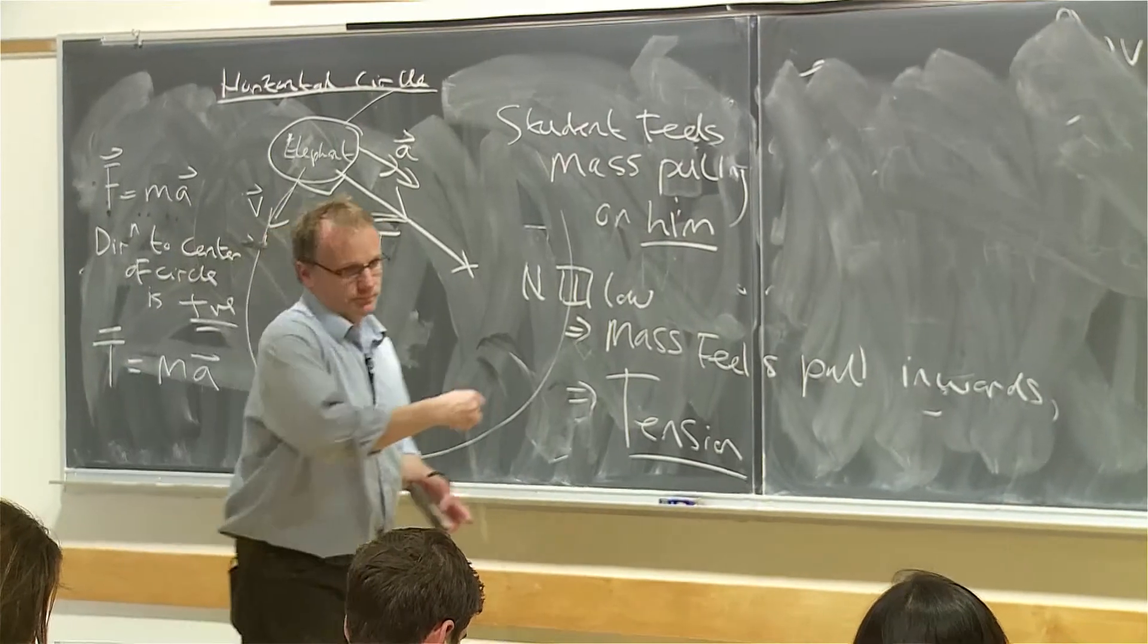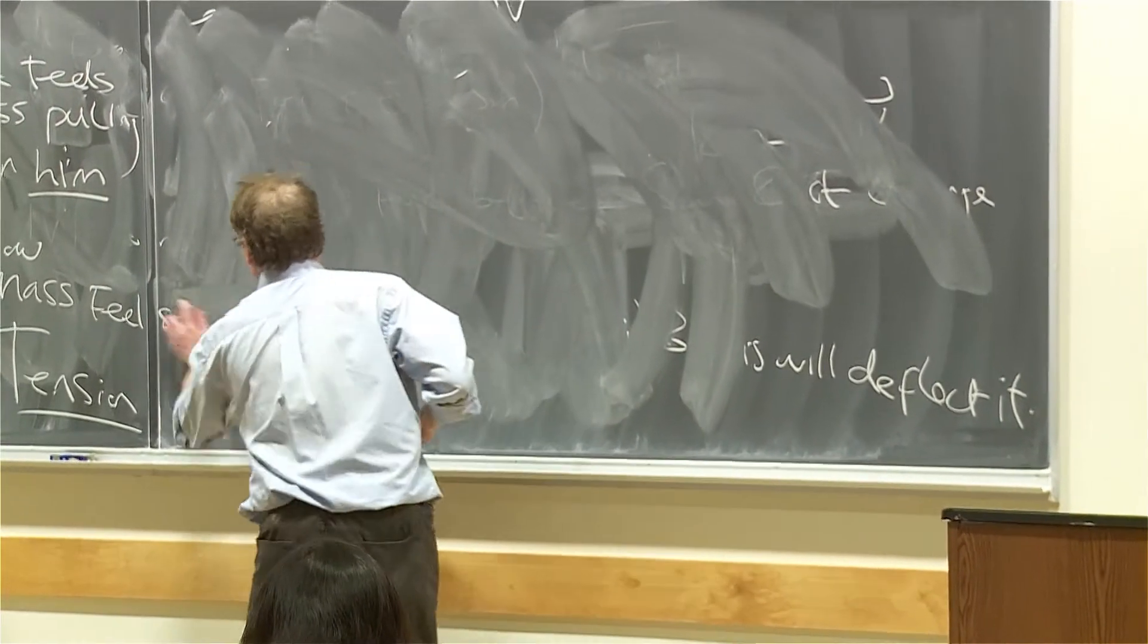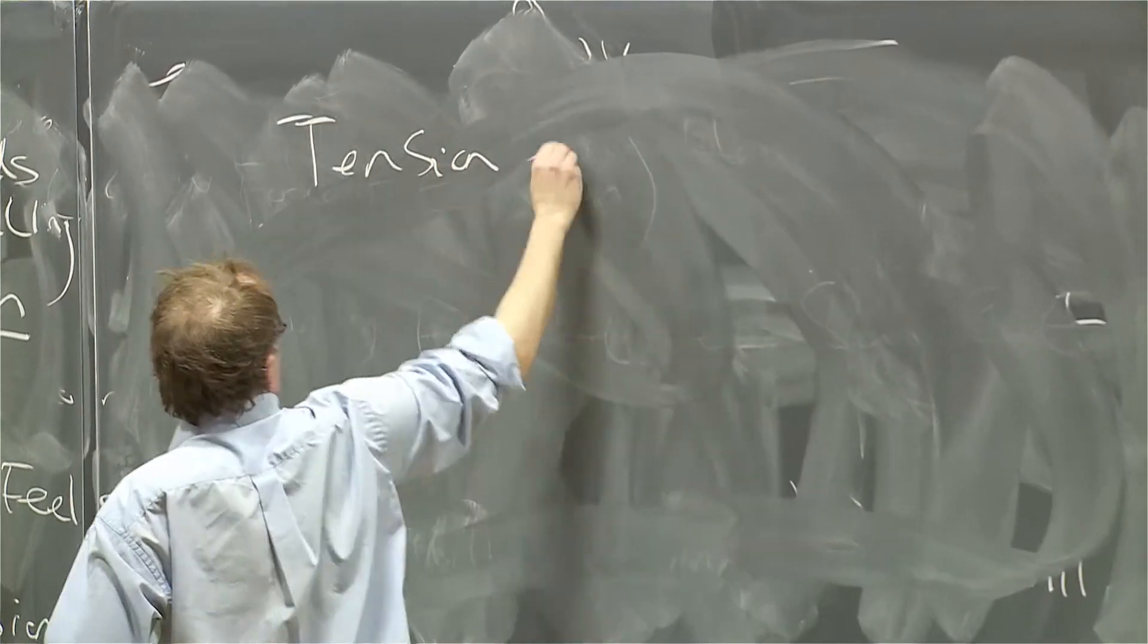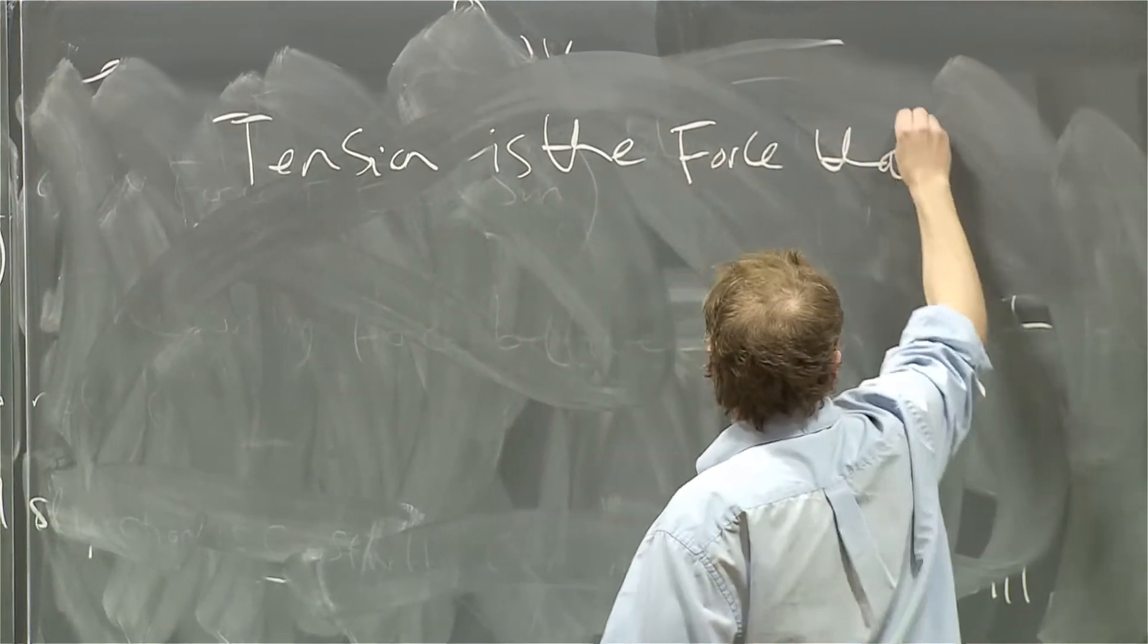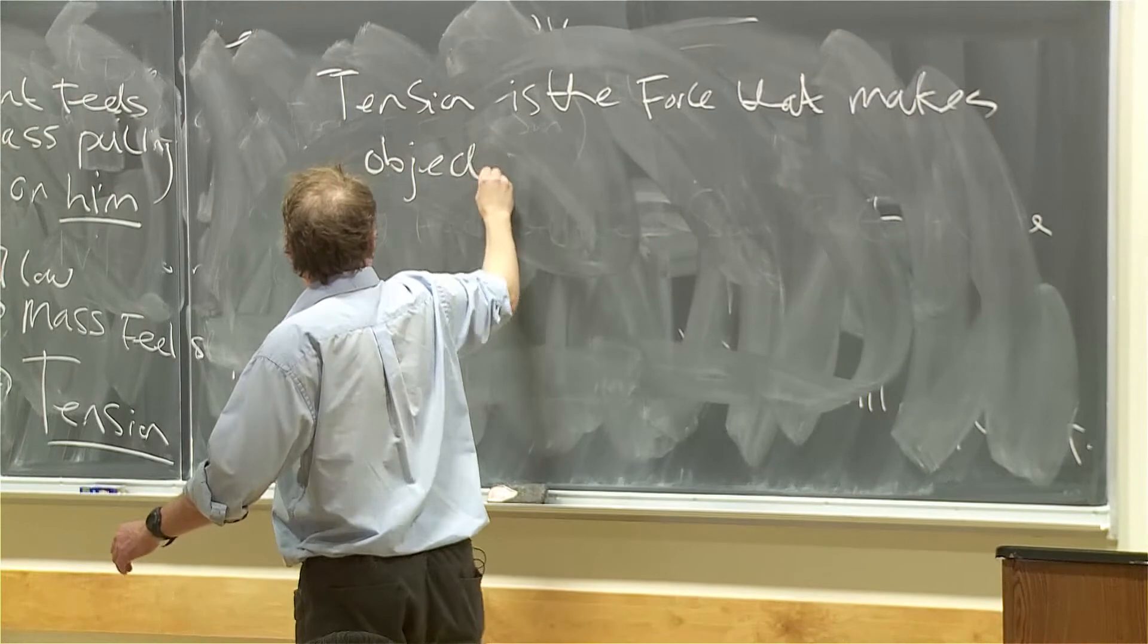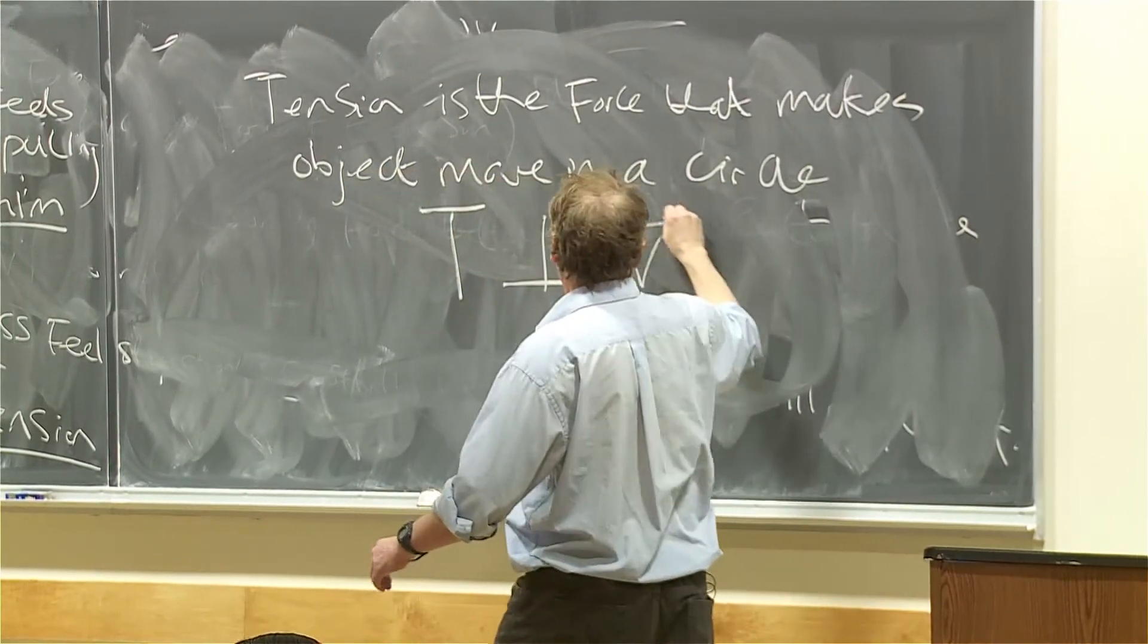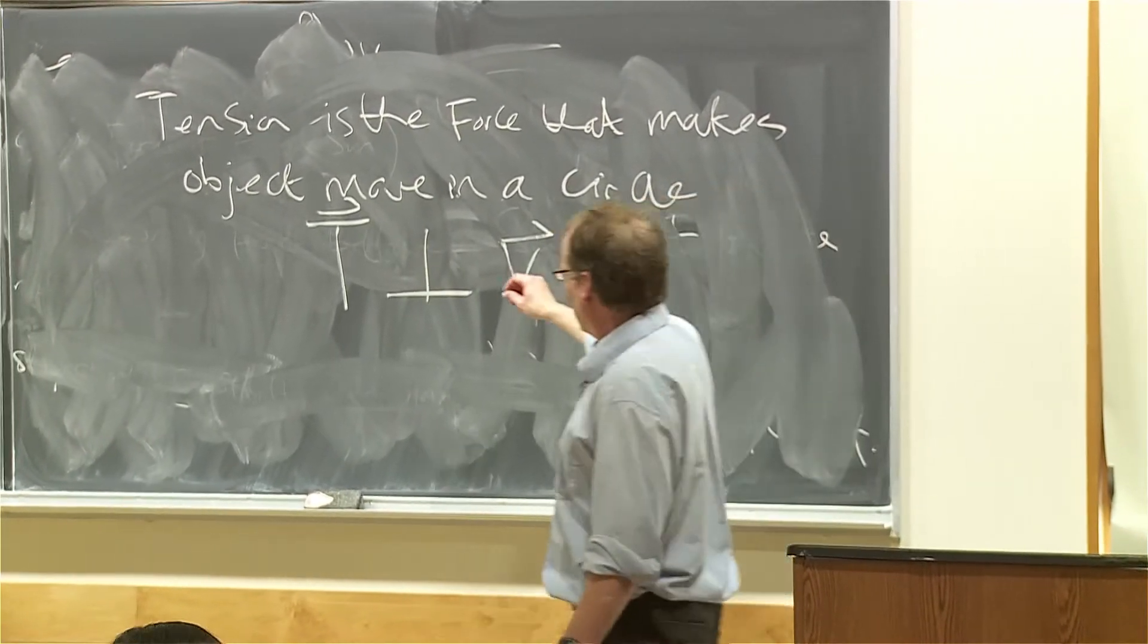So, you could say, in this case, the tension is the force that makes the object move in a circle. And the tension is perpendicular to the velocity. I put these vector signs because they have a direction. And that means perpendicular.